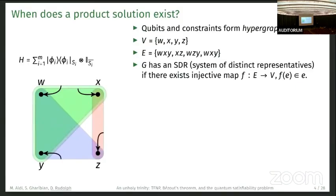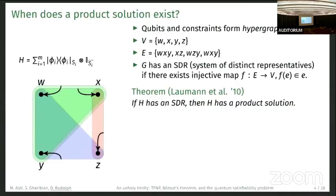This here is an example of an SDR. You map this outer edge to W, the inner edge to X, the red edge here to Z, and the blue edge to Y.